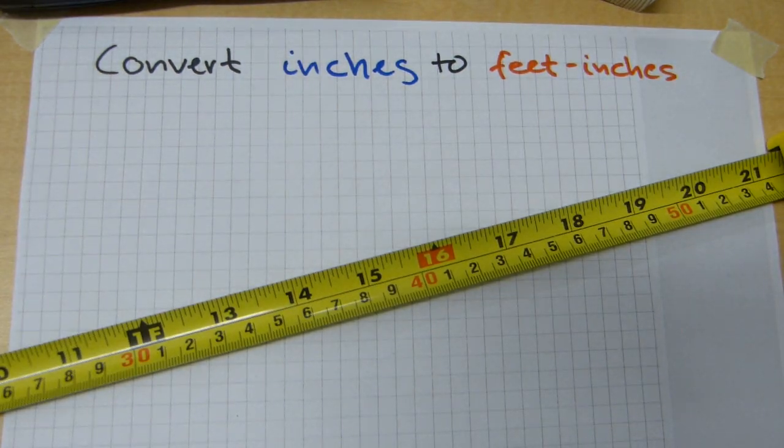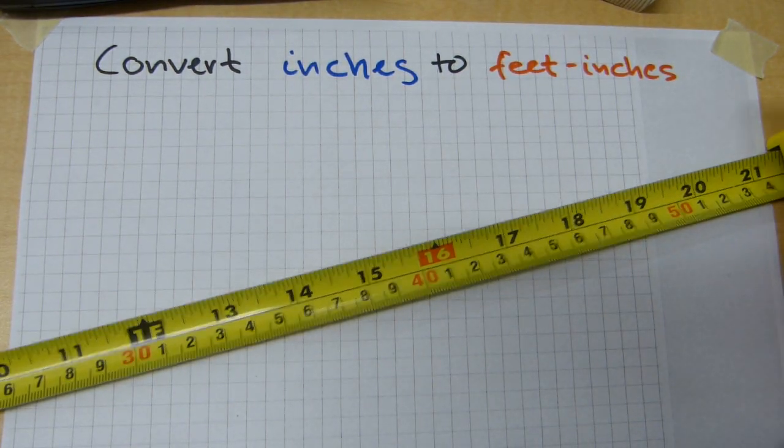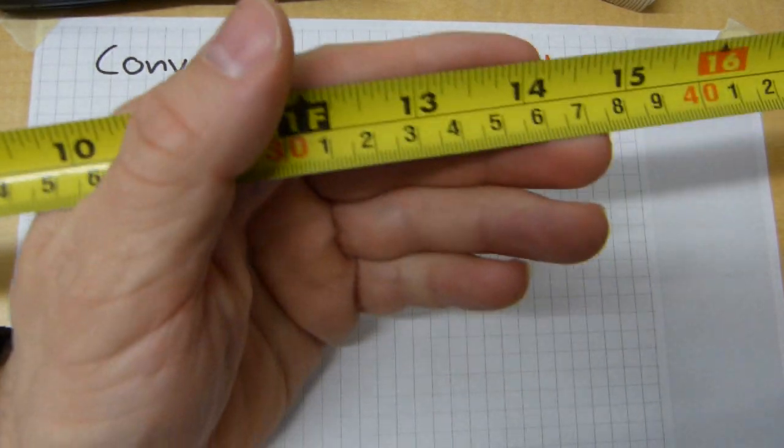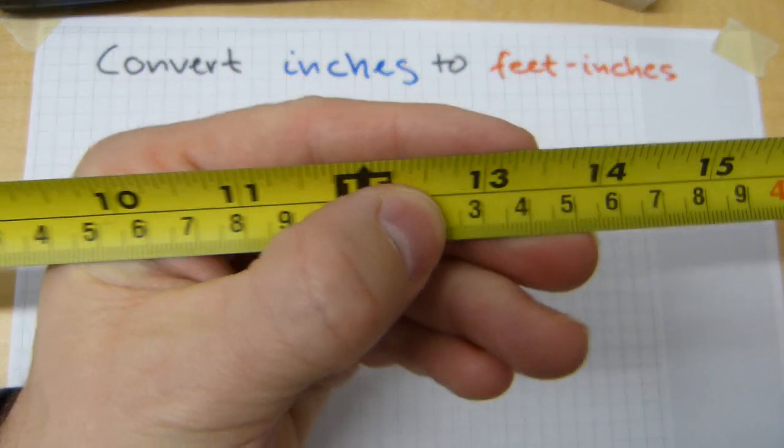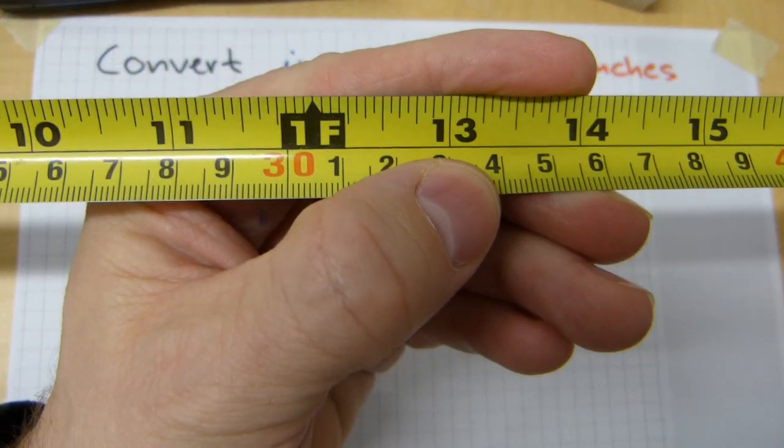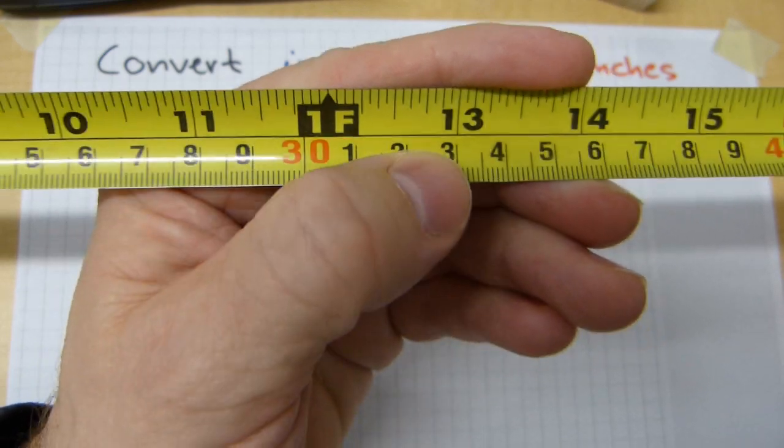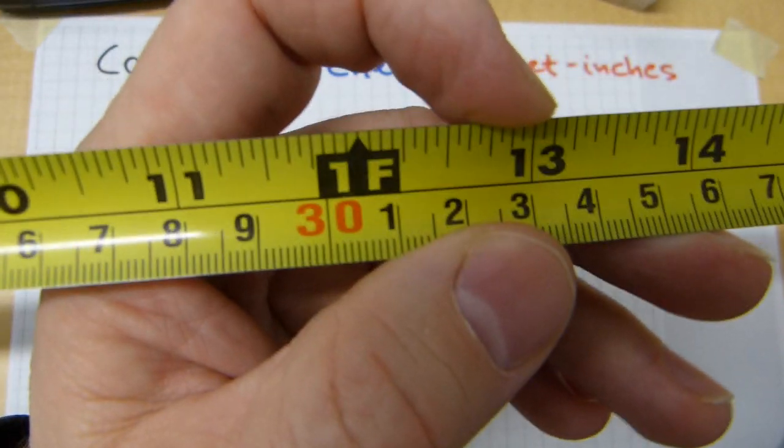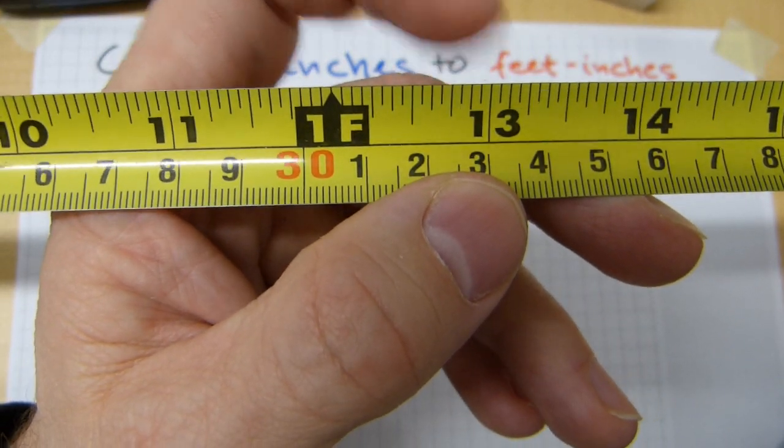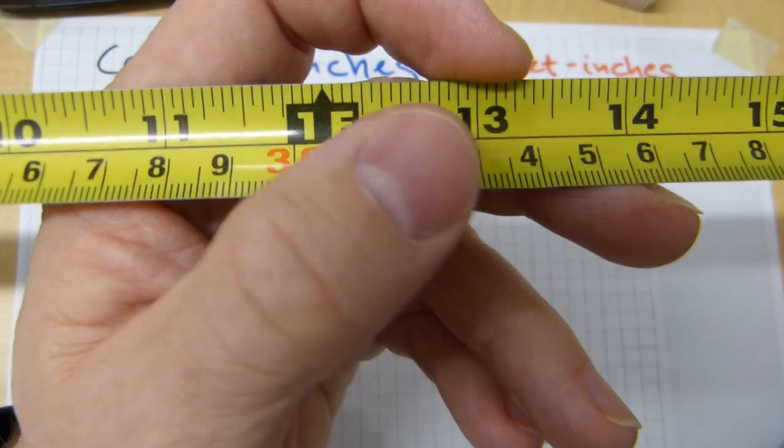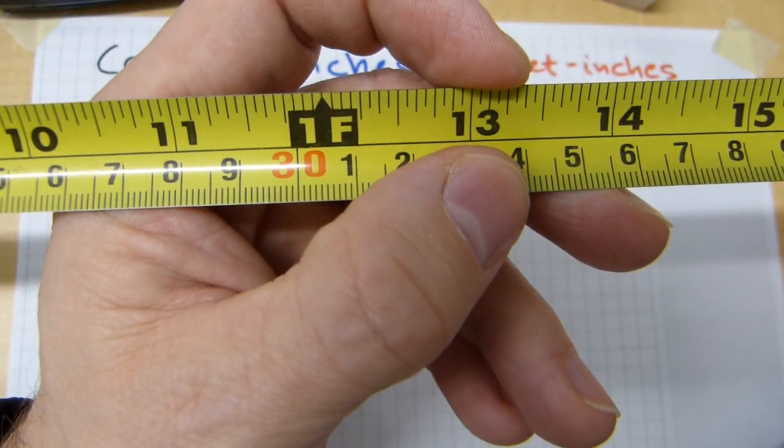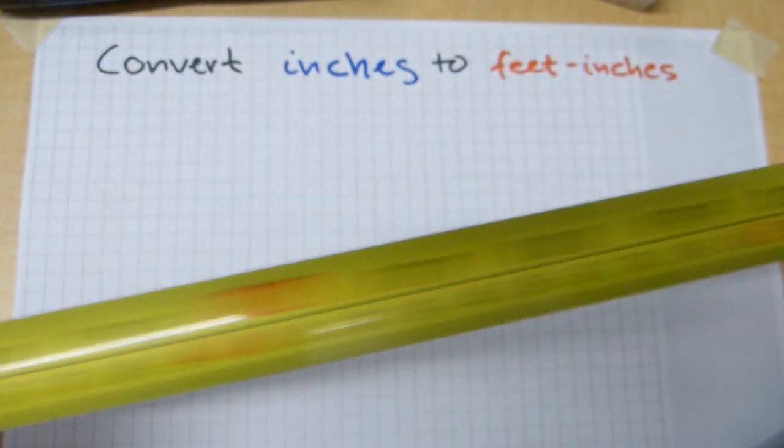What if you don't have a tape such as that? No problem. 12 inches make a foot, obviously, so 13 inches would be here, just past the 1 foot mark. On this tape nothing indicates that 13 inches is 1 foot and 1 inch. You're going to have to look and count the inches off.